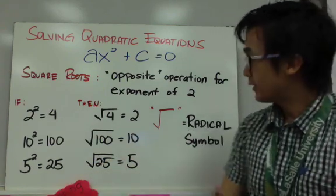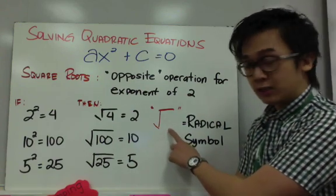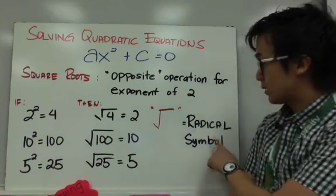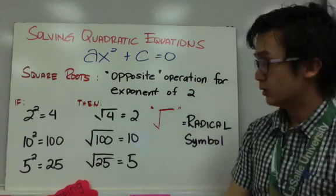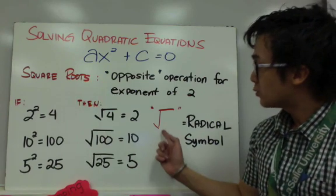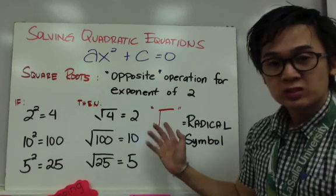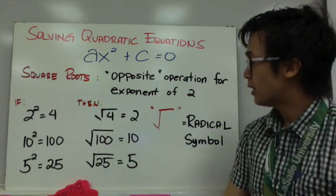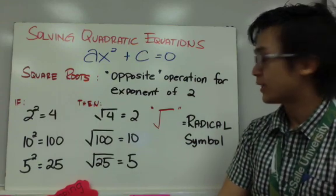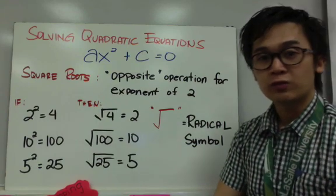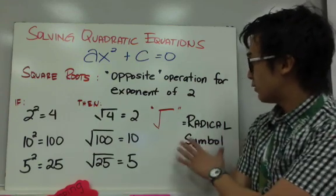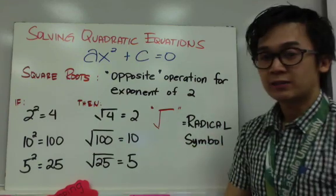Take note that this symbol right here is what we call the radical symbol. Sometimes we call it square root, and in the next few weeks we're going to see cube roots or fourth roots, but in general form we call this a radical.